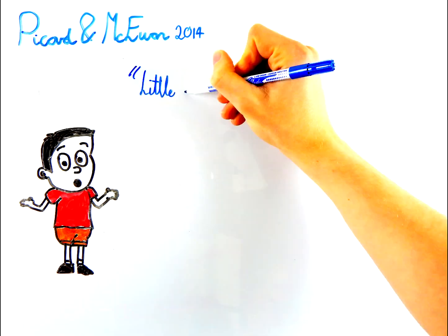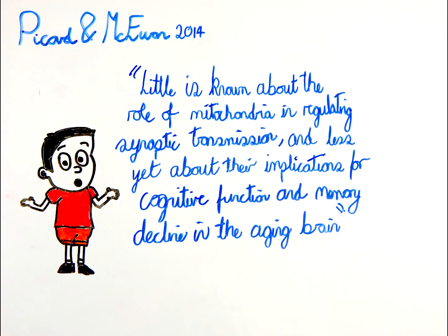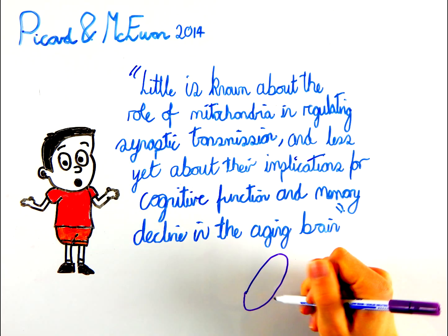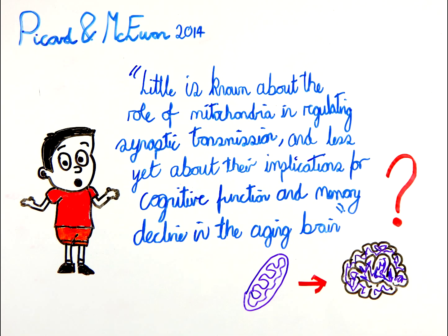Additionally, there is also concern about the medical repercussions of such an unknown procedure. For example, as Picard and McEwen pointed out in their 2014 review, little is known about the role of mitochondria in regulating synaptic transmission, and less yet about their implications for cognitive functions and memory decline in the aging brain.